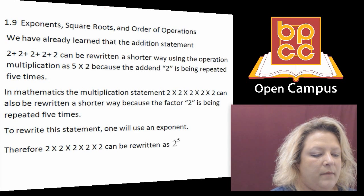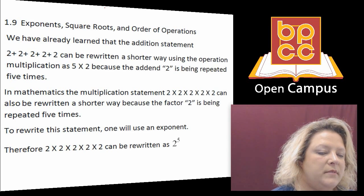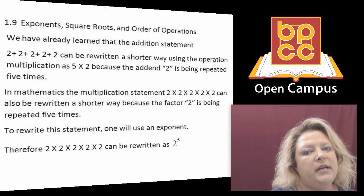If you look at this slide that I'm looking at, it talks about the number two. If you want to multiply two by itself five times, then that would be two to the fifth power, which is 32.